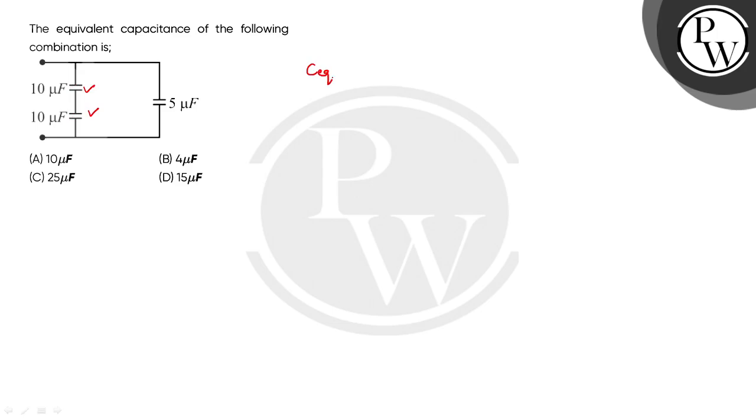In series, we know what C equivalent is: C1 times C2 divided by C1 plus C2. This is the same as 1 by C equivalent equals 1 by C1 plus 1 by C2.